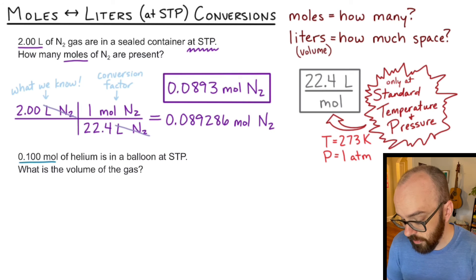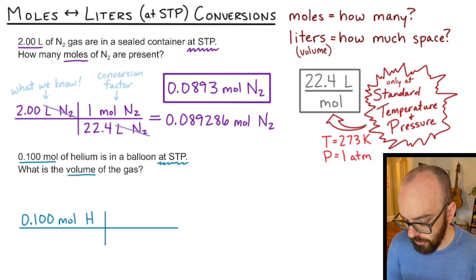Our second problem says 0.100 moles of helium is in a balloon at STP. What is the volume of the gas? So I'm converting from moles to volume, and it says I'm at STP. So I know my 22.4 liters per mole is a valid conversion factor. Set up my table. And I'm starting with 0.100 moles of helium. My conversion factor is 22.4 liters per mole. I want the moles to be on the denominator, so they divide out with moles over here. So one mole of helium.